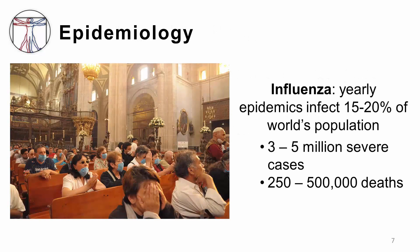Influenza occurs globally, infecting up to one-fifth of the world's population each year. Illnesses can result in hospitalization and death, mainly among high-risk groups, which includes the very young, the elderly, and the chronically ill. Worldwide, these annual epidemics are estimated to result in about 3 to 5 million cases of severe disease and about 250 to 500,000 deaths each year.